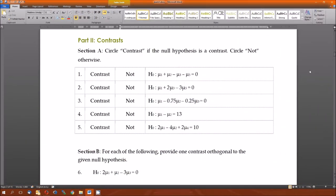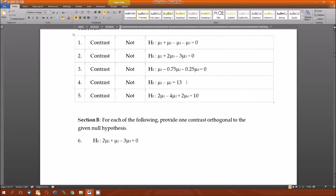Part two, contrasts. Circle contrast if the null hypothesis is a contrast and not otherwise. All five of these are contrasts. We know they're contrasts because the sum of the coefficients adds up to zero. One plus one plus a minus one plus zero plus a minus one is zero. One plus zero plus two plus zero plus negative three is zero. So, all five of these are contrasts. Contrast, again, depends solely on the coefficients of the mu's. So, even four and five are contrasts. The thirteen and the ten are completely irrelevant.